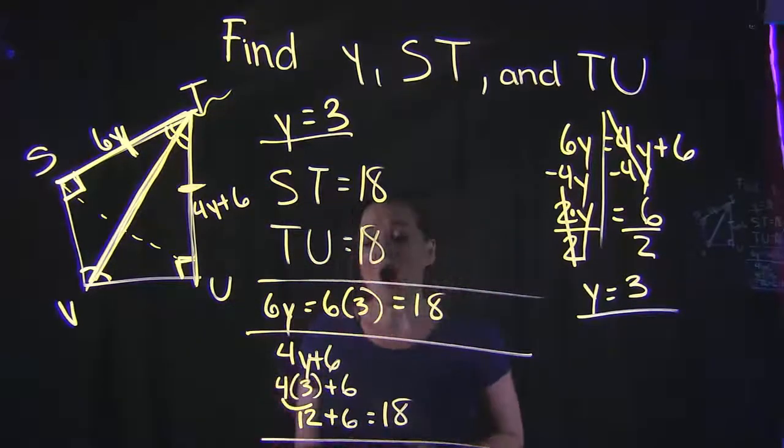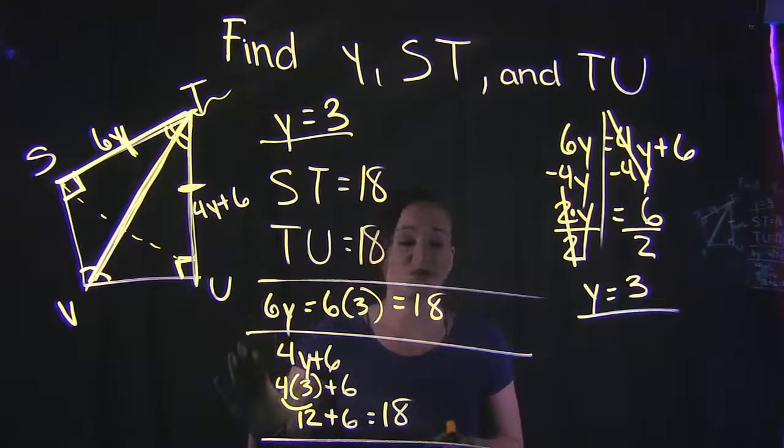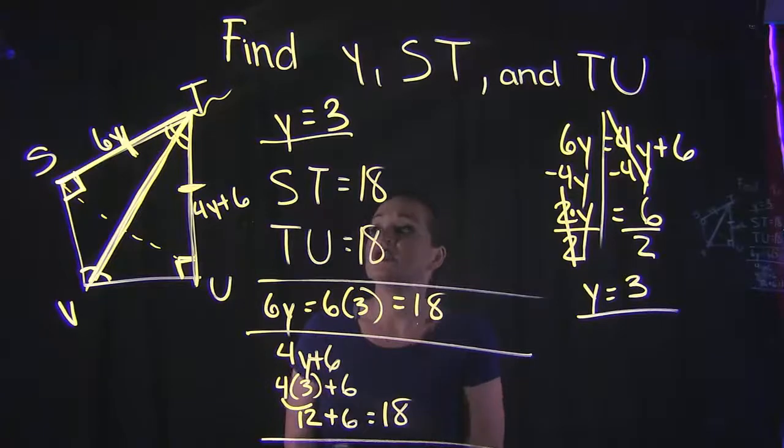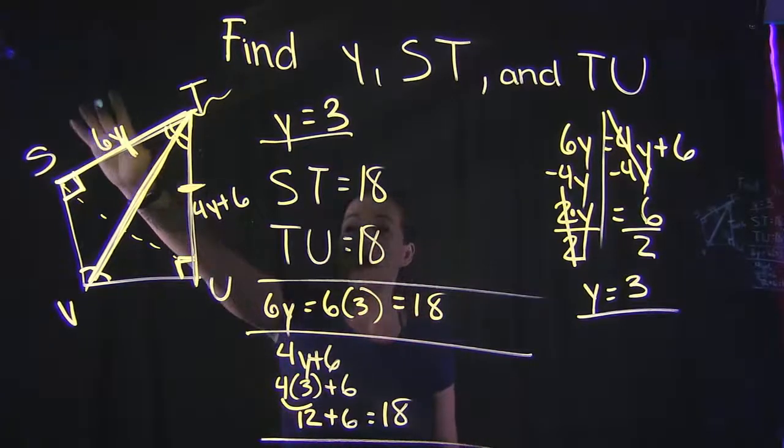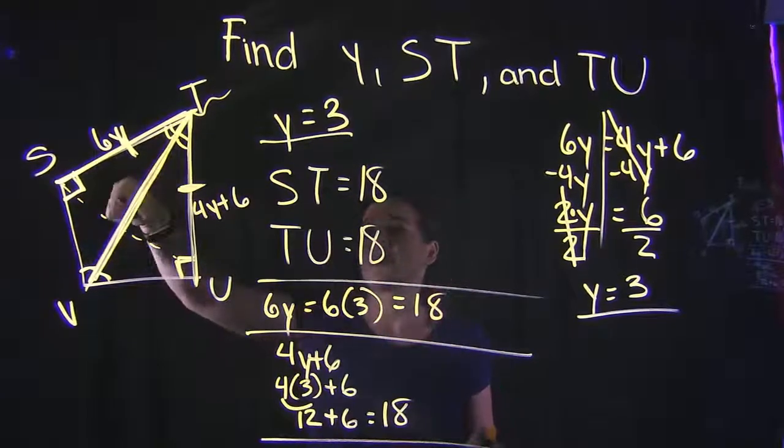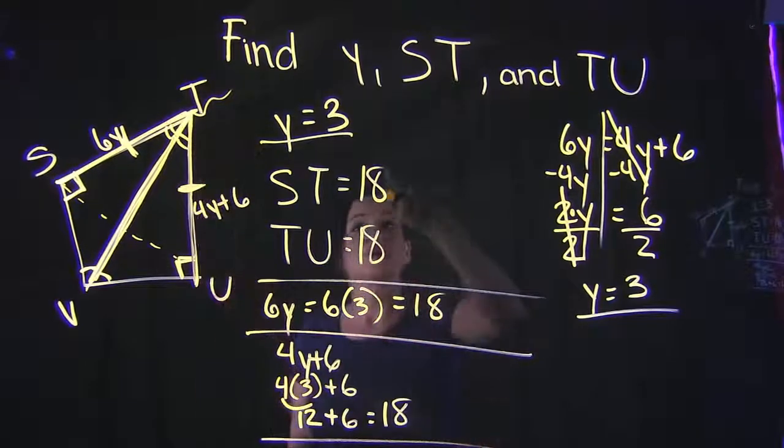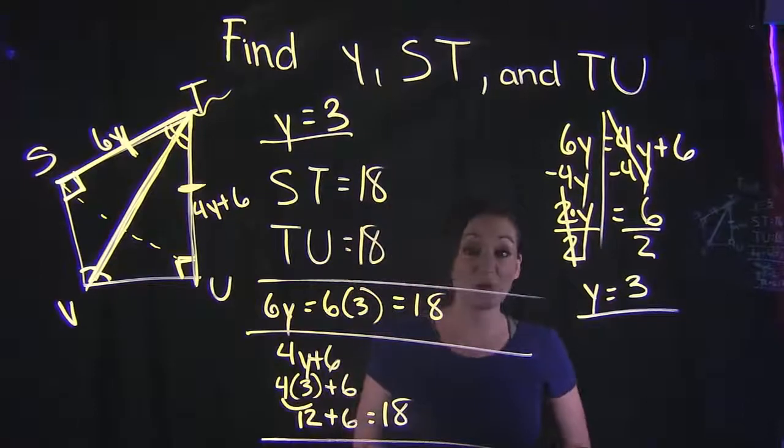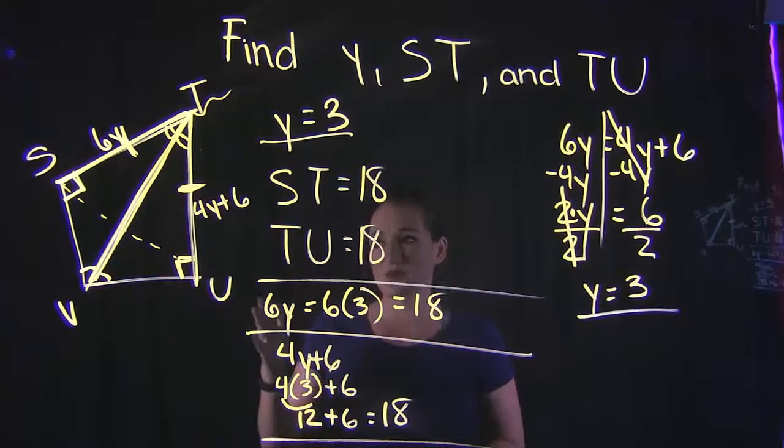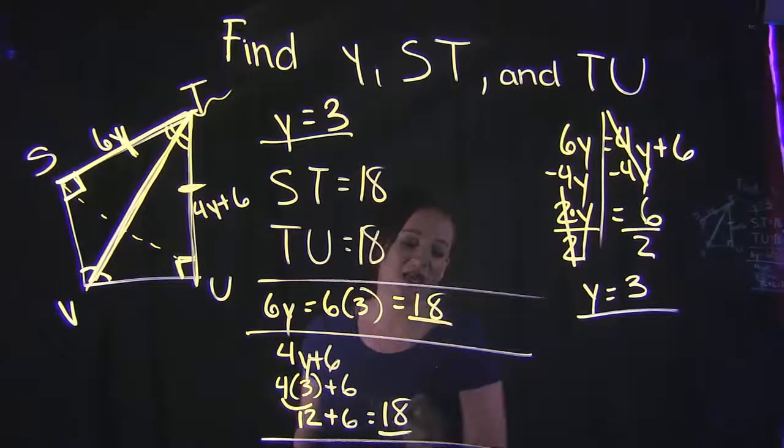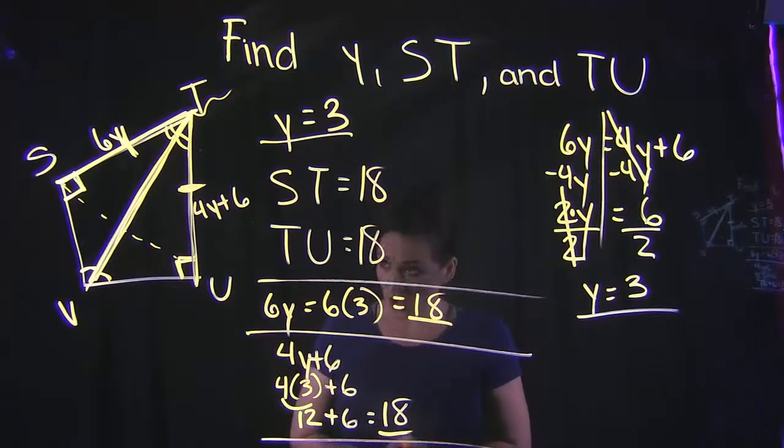Which makes sense, because remember, ST is the same thing as TU. Honestly, we didn't even need to substitute into this 4y plus 6—once we find ST, we know it's the same thing as TU, so we can automatically just label them both the same. But again, just for verification, plugging it into 4y plus 6, it does come out to 18, and we see that they do match up, so they are congruent sides there. Otherwise, that's it for this video.